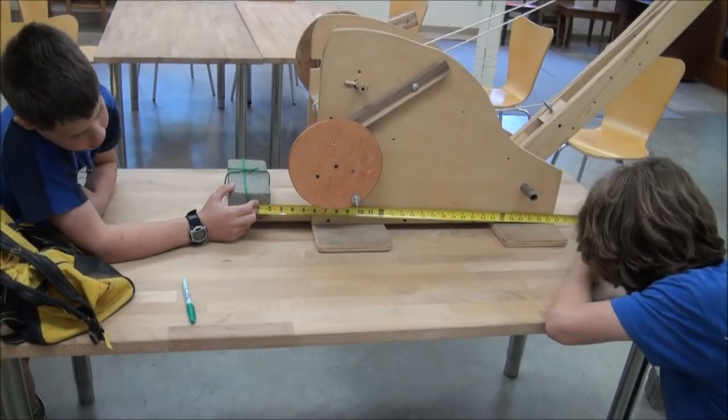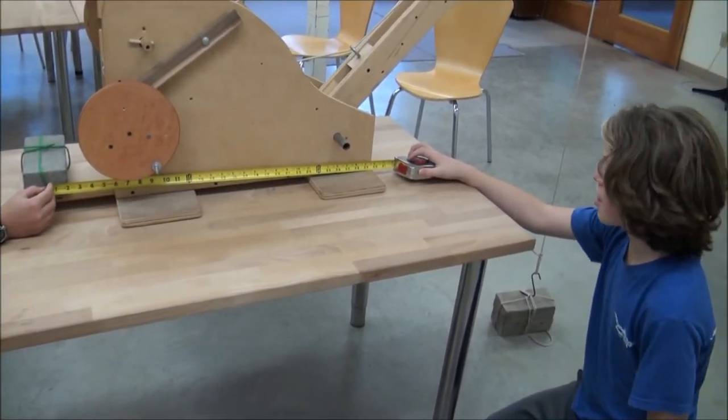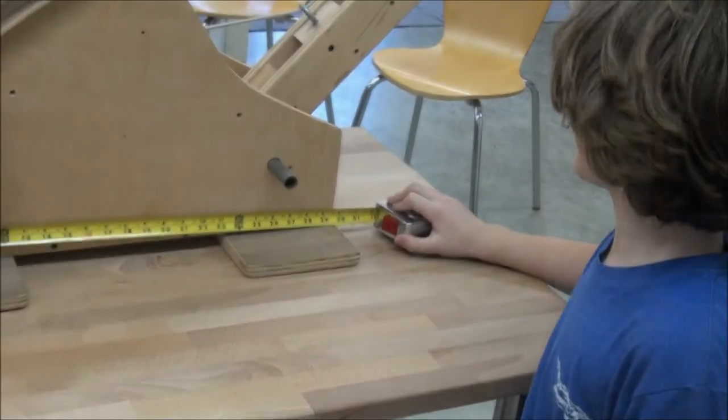We're going to measure from the center of gravity of the counterweight to the pivot point. Can we call it 30? Yeah, sure, 30. It's 30 inches.